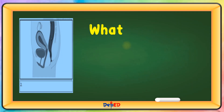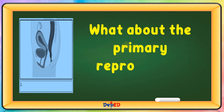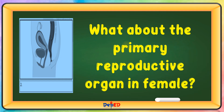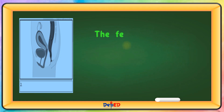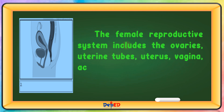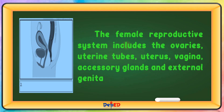What about the primary reproductive organ in females? The female reproductive system includes the ovaries, fallopian tubes, uterus, vagina, accessory glands, and external genital organs.